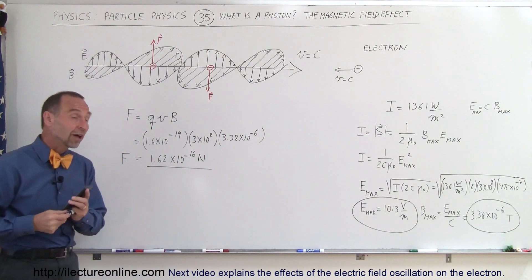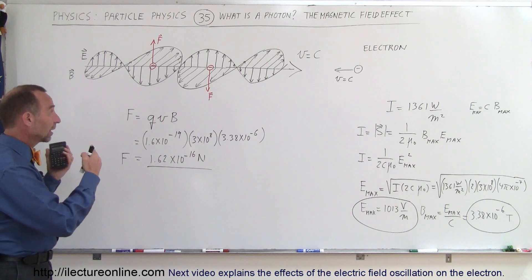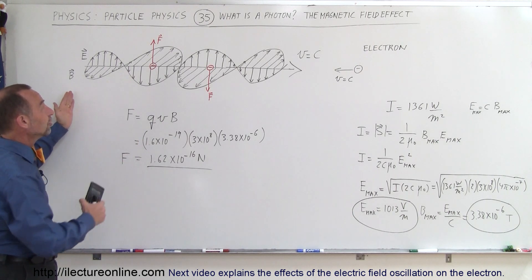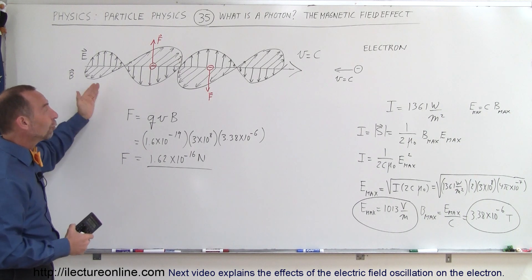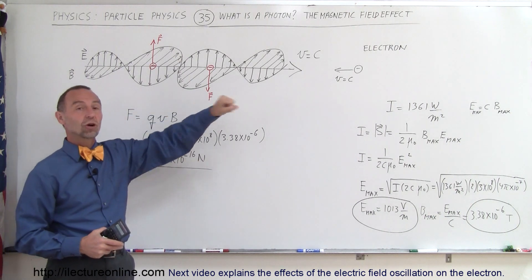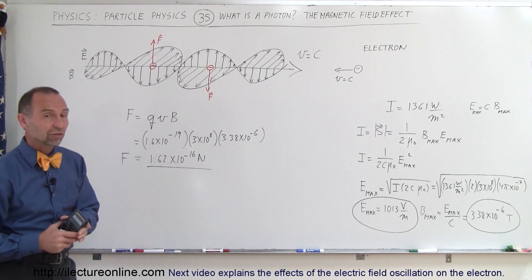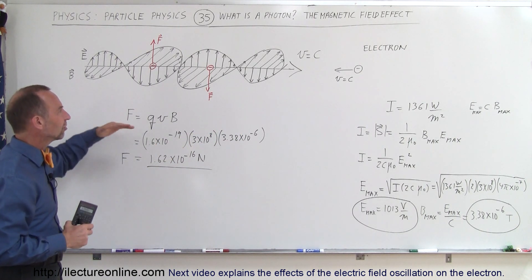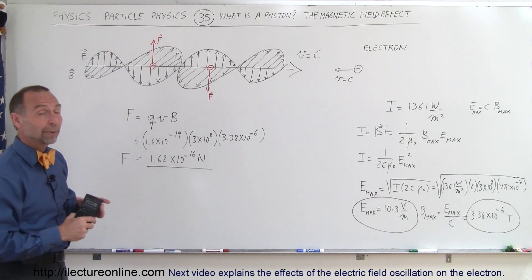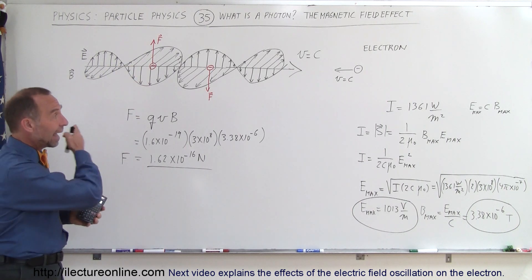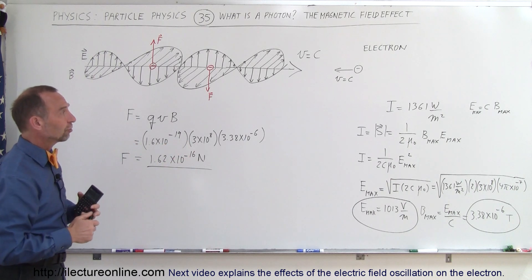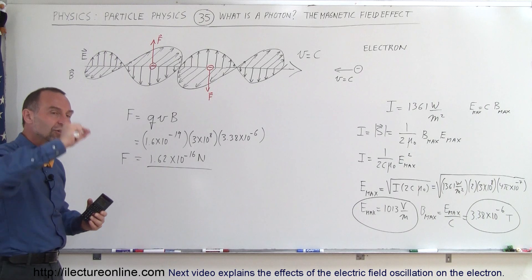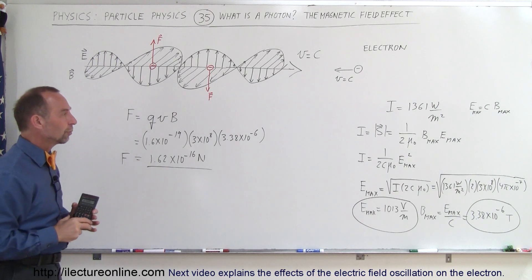So you can see that the magnetic field oscillations inside a photon — inside electromagnetic radiation — cause a force effect on a charge, in this case an electron, as the photon rushes past. It has the effect as if the electron is rushing past the light, and the force will oscillate depending upon the direction of the magnetic field, causing an oscillating force on the electron as the photon rushes by.